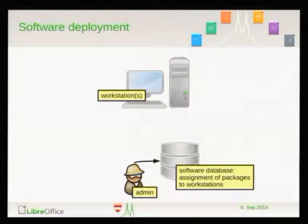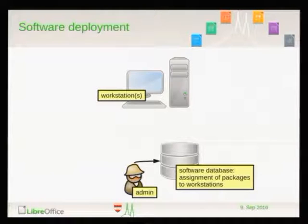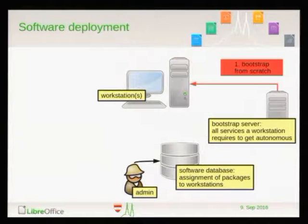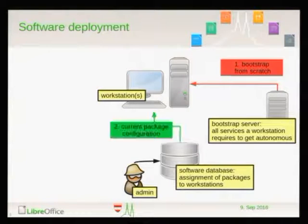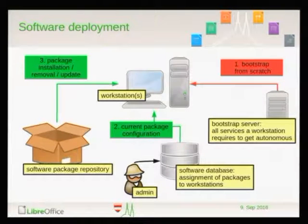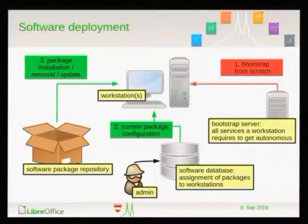To sketch roughly how the automated software deployment works in our desktop environment: the idea is you have a software database which models the assignment of software packages to workstations. The admin does configuration there, and after pushing the 'install' button for a workstation, everything happens unattended. There is a dedicated bootstrap server which provides everything for a new workstation to bootstrap itself from scratch. After bootstrap, the workstation retrieves its current package configuration from the software database and installs the required software packages. The key point is that it's automated — you do everything centralized using your software database.